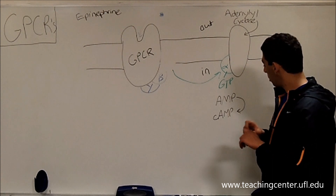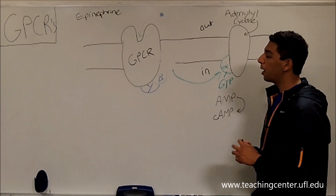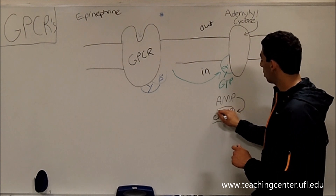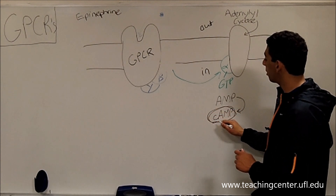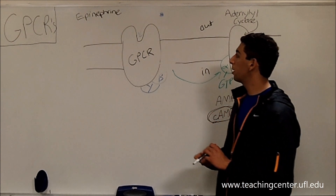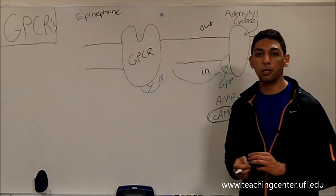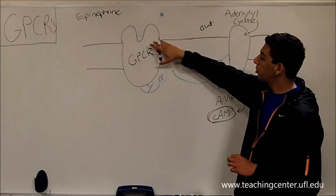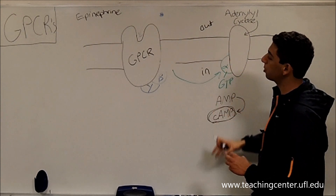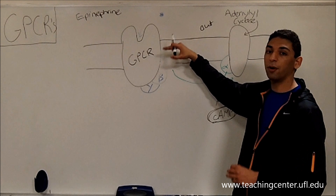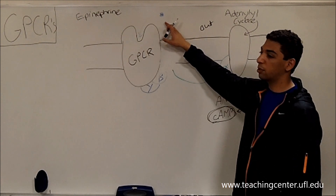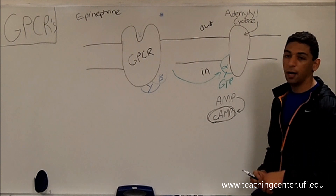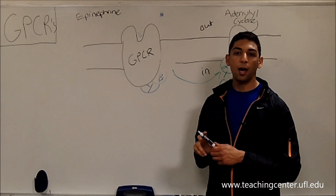Cyclic AMP is a very important second messenger. It does a lot of different things depending on what the original signaling molecule is. Notice that epinephrine has initiated this whole signal transduction pathway but hasn't crossed the membrane itself — it has essentially handed the baton over to cyclic AMP and said, 'You go finish the race for me.'